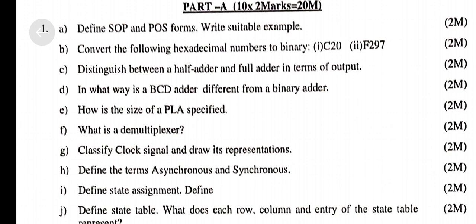Convert the following hexadecimal numbers to binary: C equal to F297.